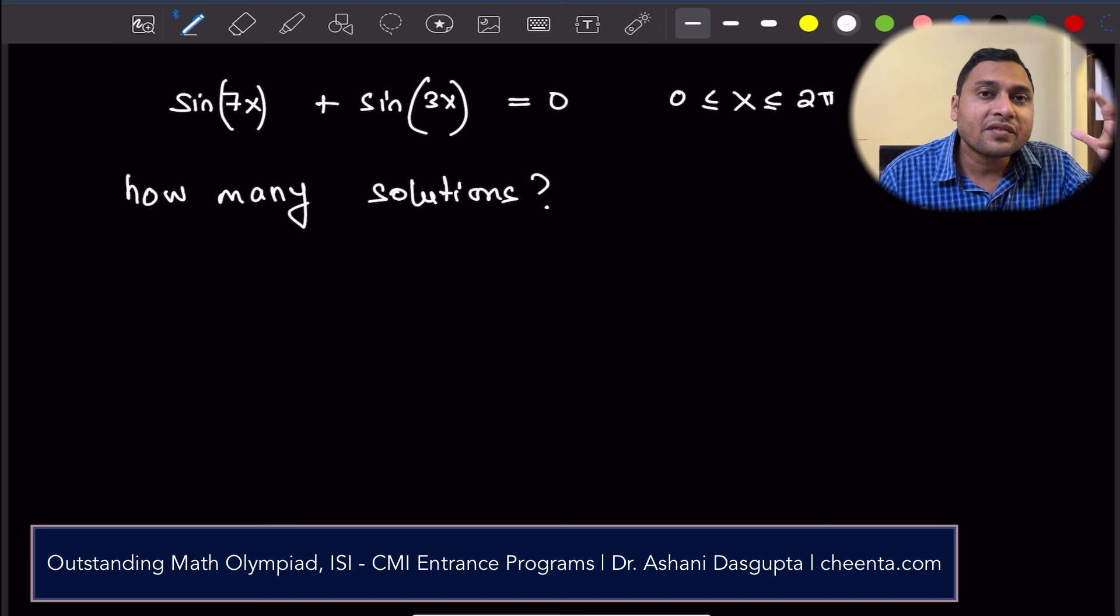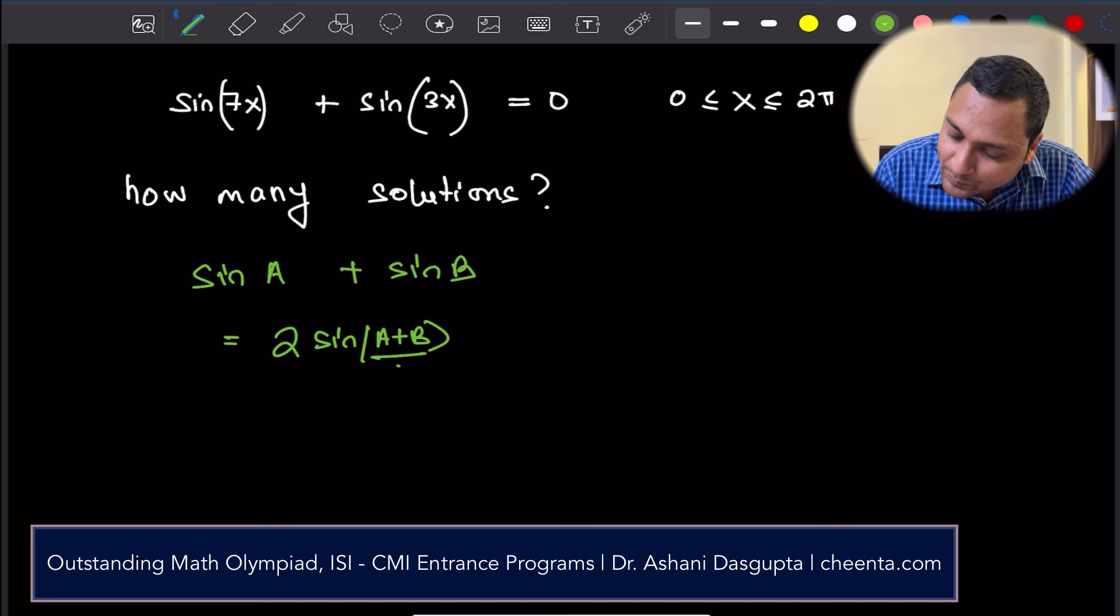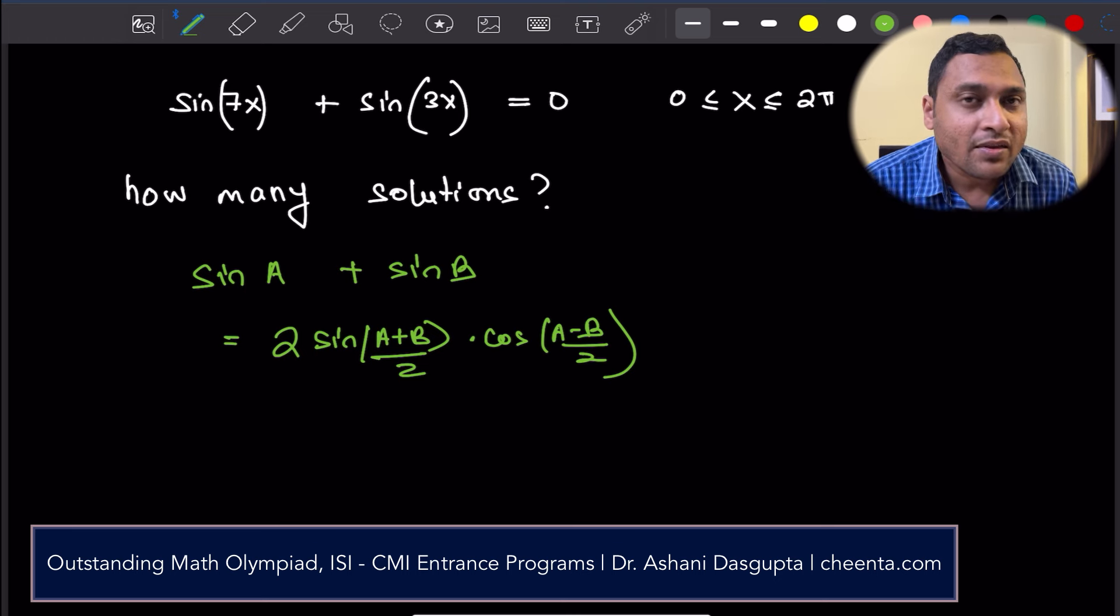The first thing that we will use is a very well-known algebraic identity. This is sin(A) + sin(B) = 2sin((A+B)/2)cos((A-B)/2). This is a very useful identity. If you do not know why this is true, I would encourage you to think about a proof of it instead of actually looking up the proof. You can use the normal multiple angle formulas and compound angle formulas to prove this. Once you prove it yourself, you will never forget it. So give it a try.